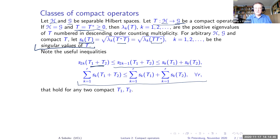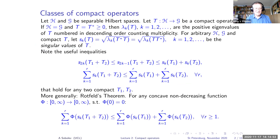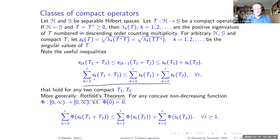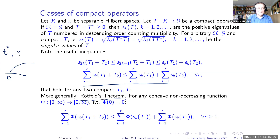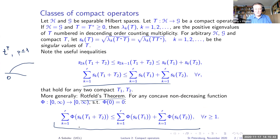The most important inequality for us is Rottfeld's theorem, which generalizes the sum inequality. Instead of a linear function — that is, the sum of singular values — we take an arbitrary concave non-decreasing function equal to zero at zero. Think of something like a square root or any power less than or equal to one. For any such function, this inequality holds — a remarkable fact.